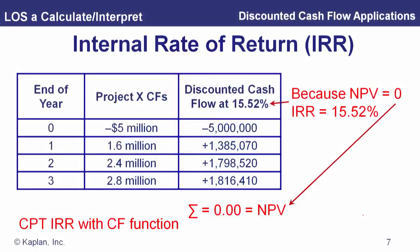Looking at the same project, the IRR is 15.52%. We're illustrating that this really is the IRR: when we take the present value of each of those three future cash flows discounted at 15.52%, the present value equals exactly $5 million, so the net present value is zero. We compute this with the same cash flow function inputs as before — we just press IRR and then compute.